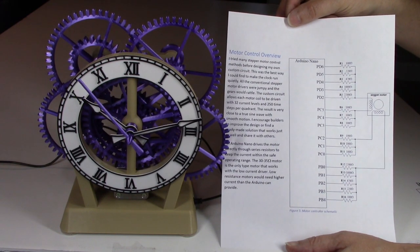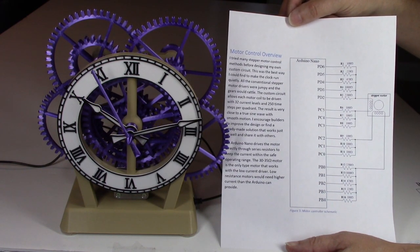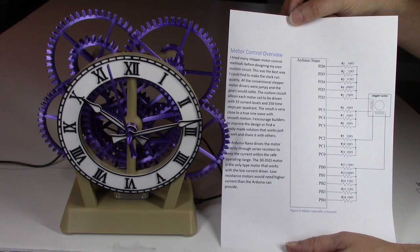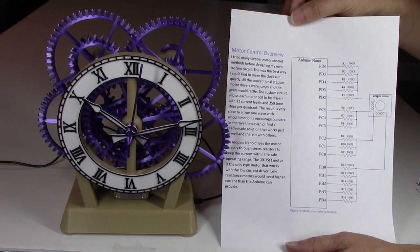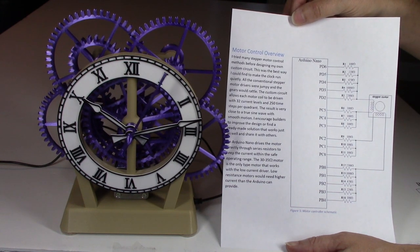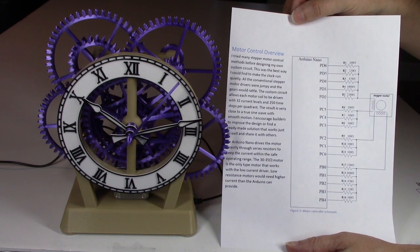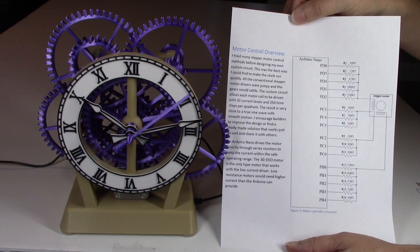The motor control circuit uses 16 outputs from the Arduino Nano and some resistors to drive the motor coils directly. And I tried many different options. This was the best thing I could find to make the motor run smooth and quietly.